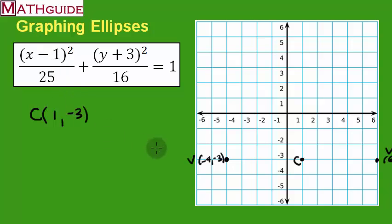So we went 5 left and right to get the x vertices, the vertices that are going left to right, almost like on an x-axis. Now let's get the vertical vertices. Let's take the square root of 16. The square root of 16 is 4. So from the center, we go up 4: 1, 2, 3, 4.